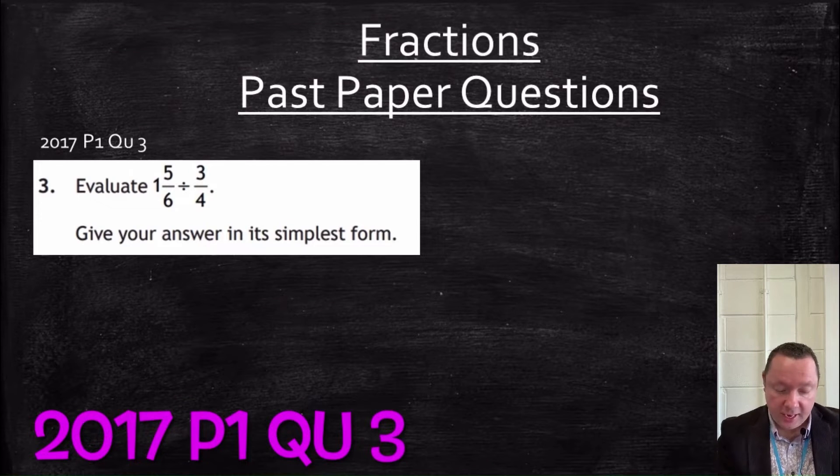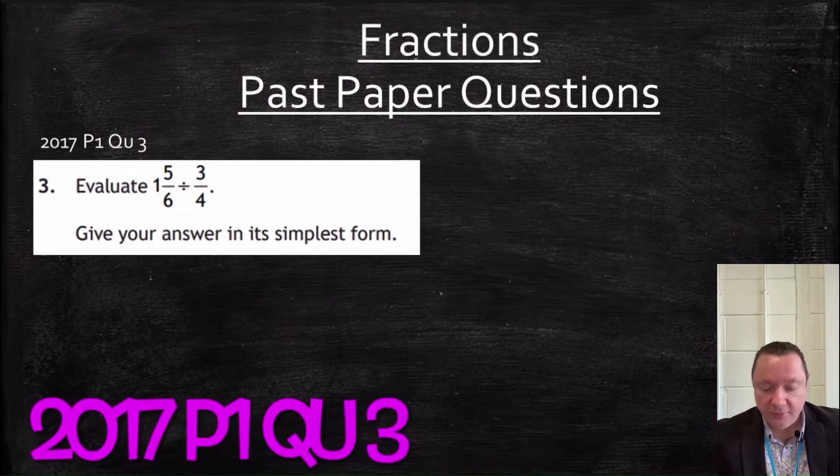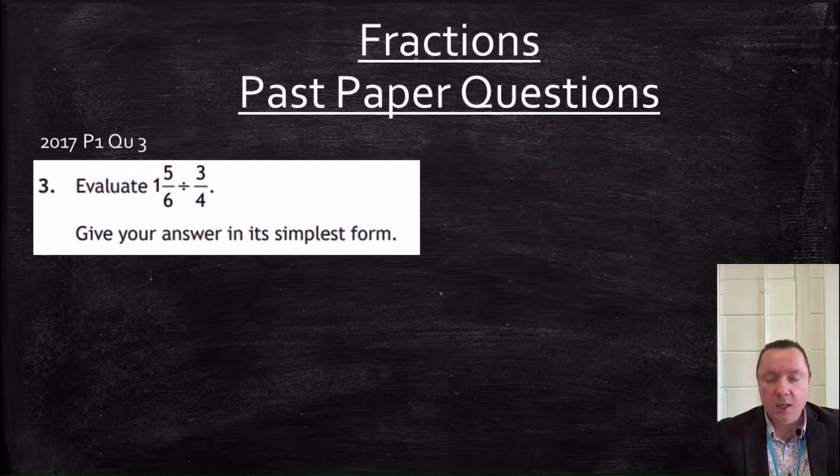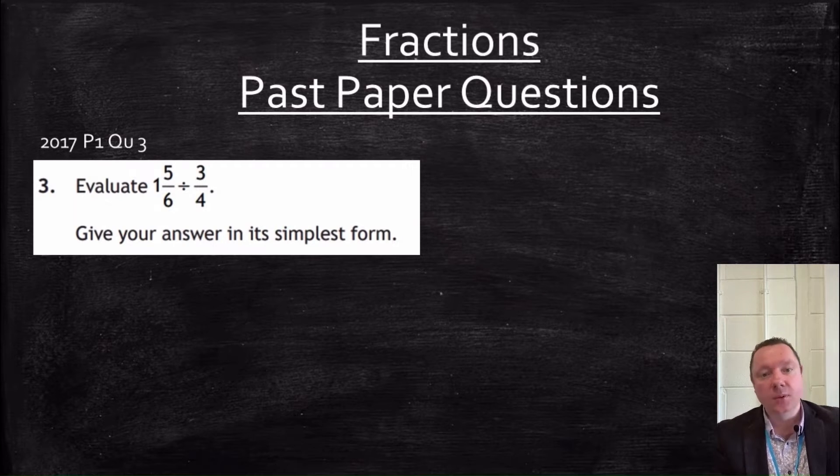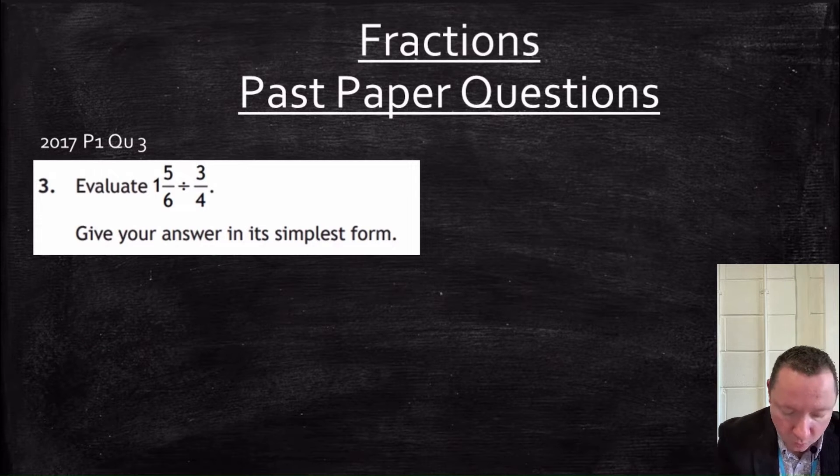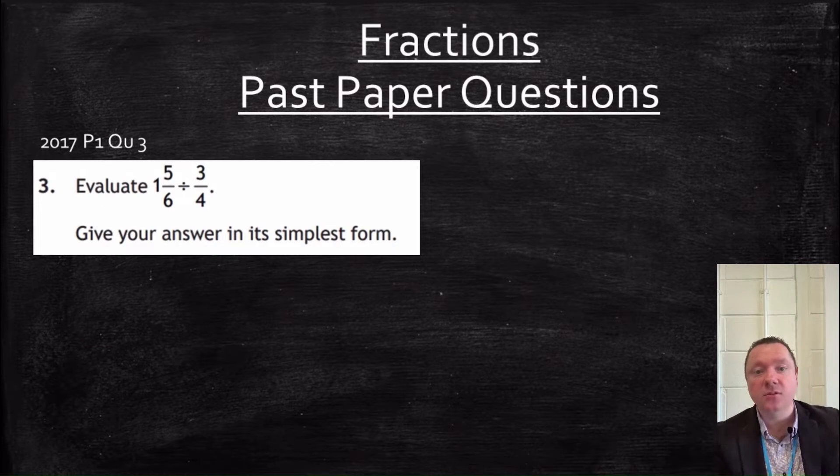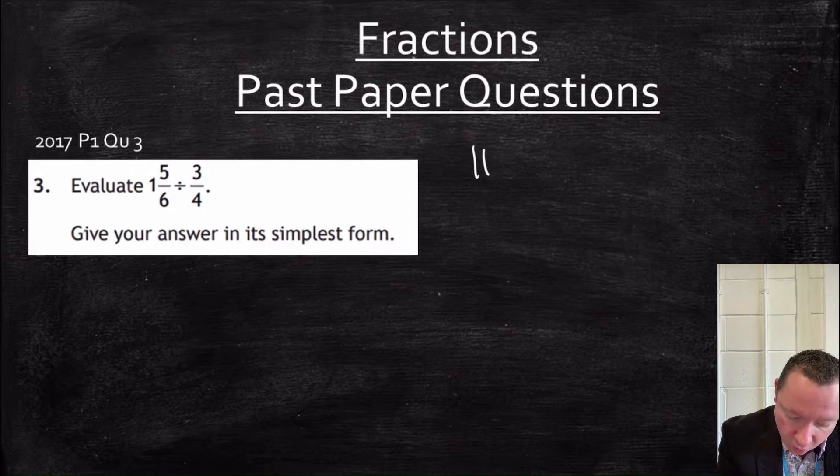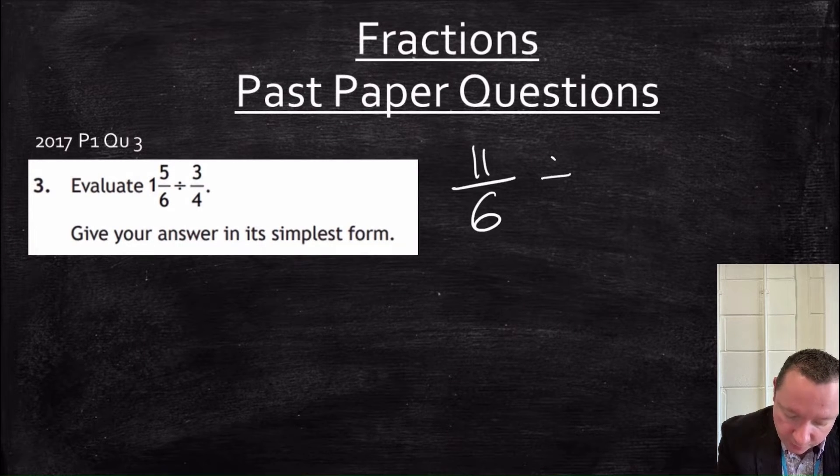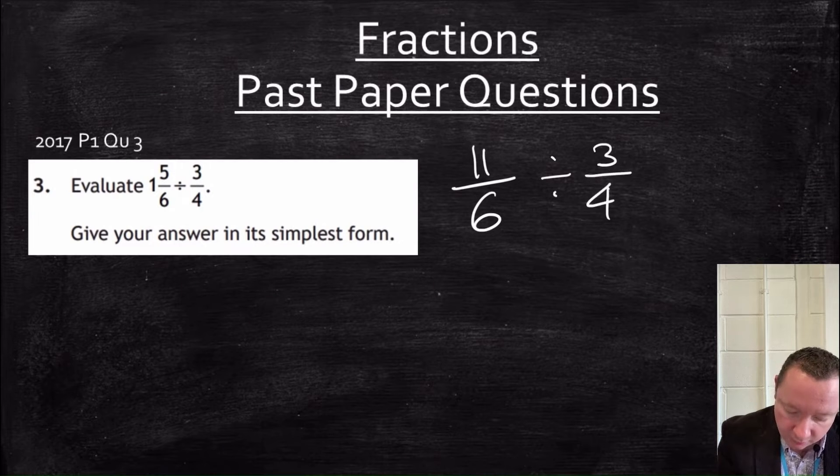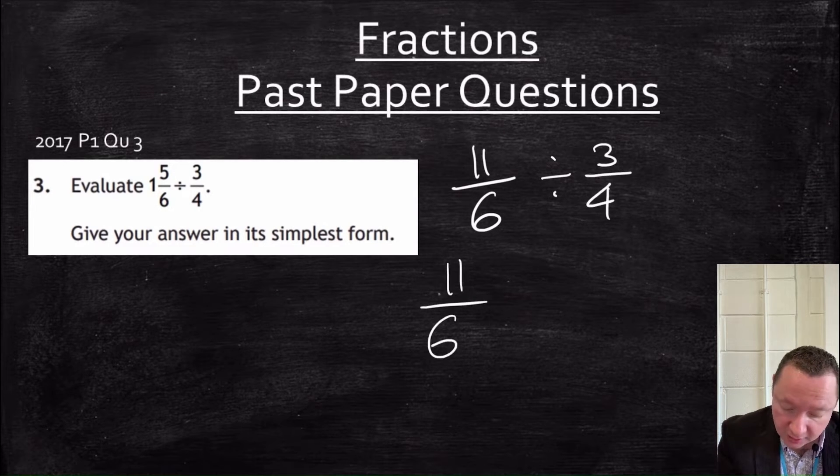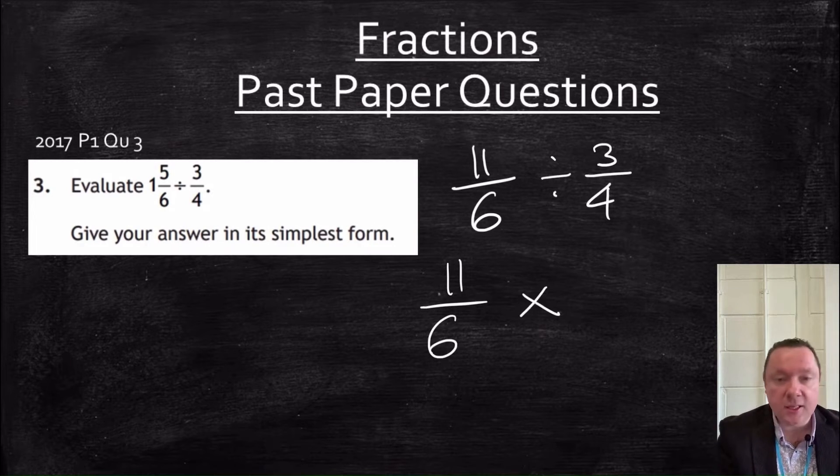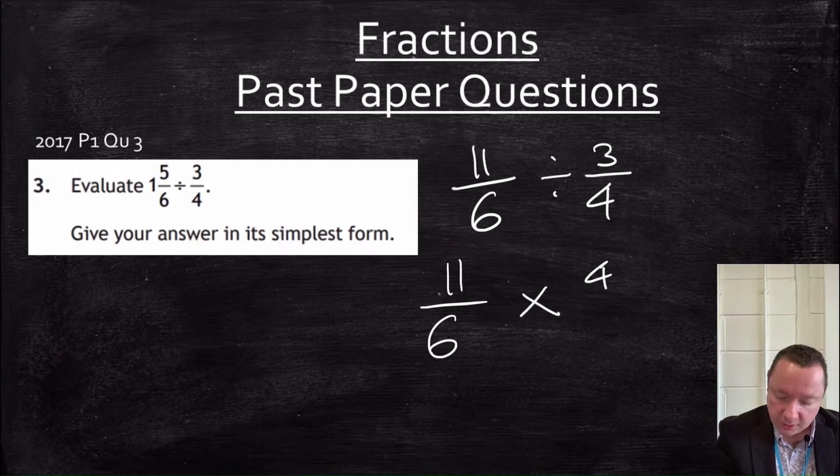2017, paper 1, question 3 says, evaluate 1 and 5 sixths divided by 3 quarters and give your answer in its simplest form. So we change the mixed numbers into fractions first. So 1 and 5 sixths, 1 times 6 is 6, plus 5 is 11. So that becomes 11 over 6 divided by 3 quarters. So that becomes 11 over 6. Dividing by a fraction is the same as times by its reciprocal. So flip the second one upside down, 4 thirds.